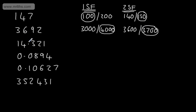Let's look at three significant figures for 3,692. If we wanted, we could do three significant figures. If I was rounding this to three significant figures, that would be to the nearest 10.